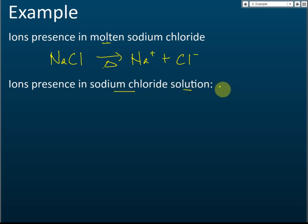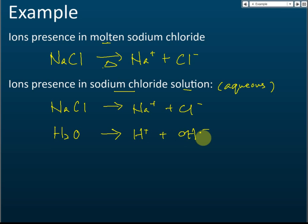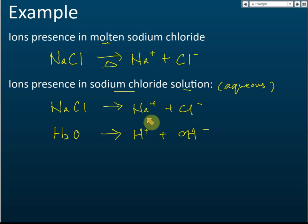For sodium chloride solution — an aqueous solution — sodium chloride dissolves in water to form sodium ions and chloride ions. But at the same time, the water molecules will also ionize to produce hydrogen ions and hydroxide ions. So there are more ions present in aqueous solutions compared to molten substances.